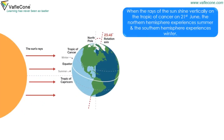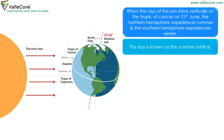When the rays of the sun shine vertically on the Tropic of Cancer on 21st June, the northern hemisphere experiences summer and the southern hemisphere experiences winter. This day is known as summer solstice.